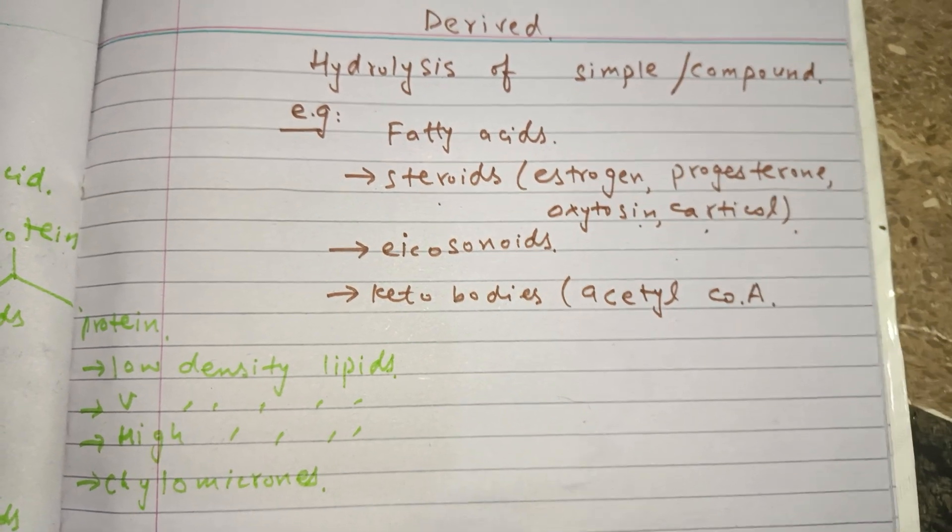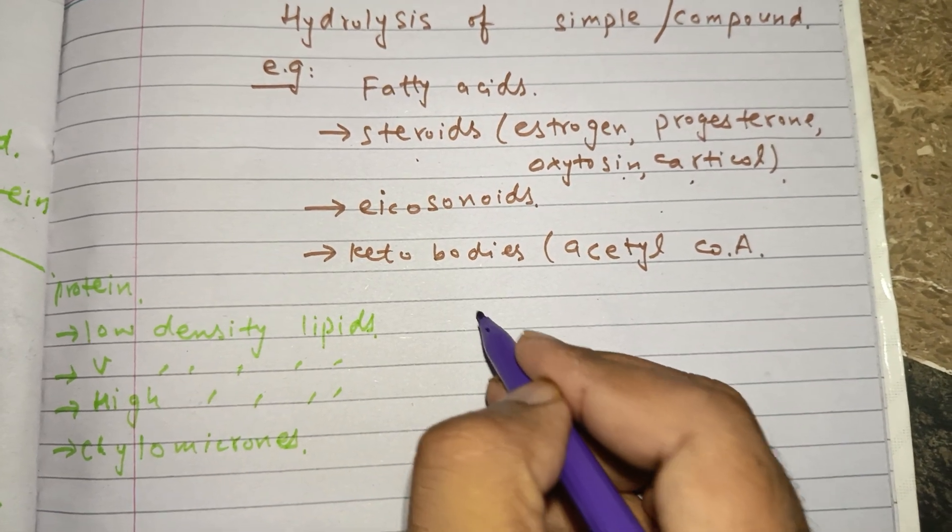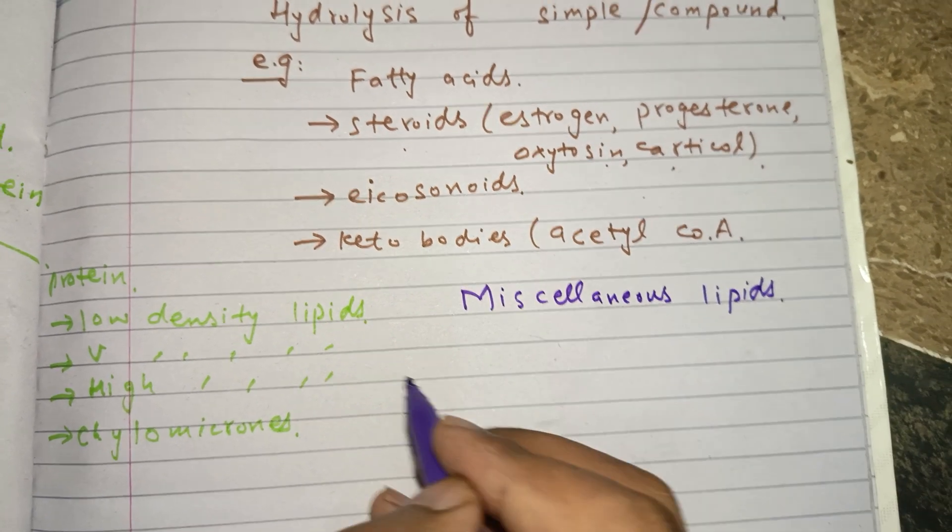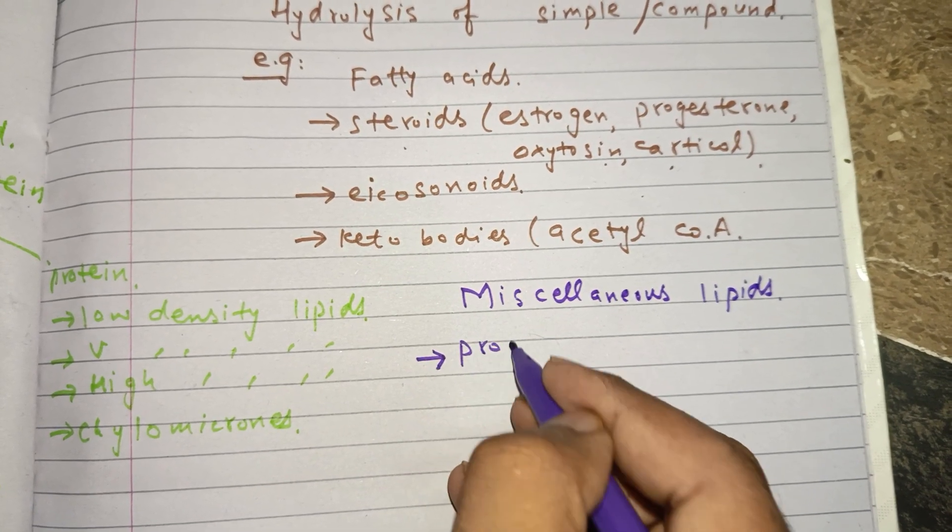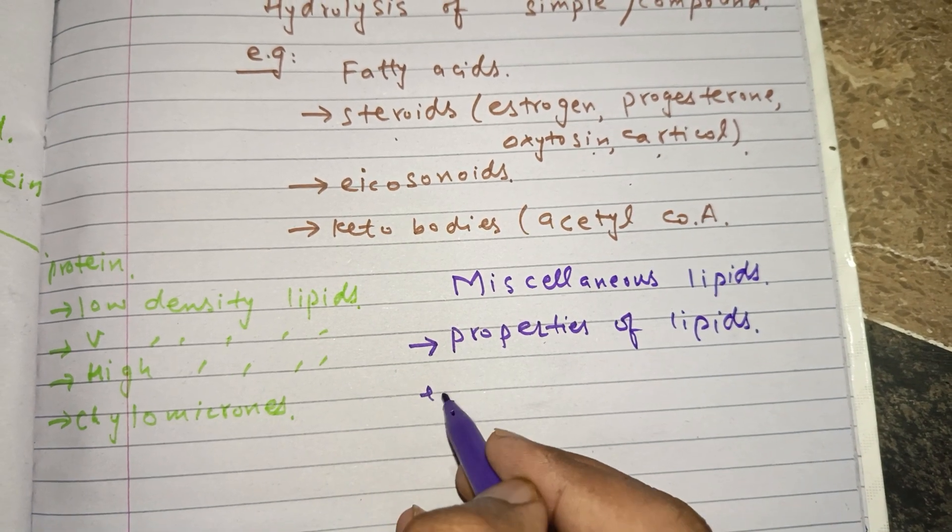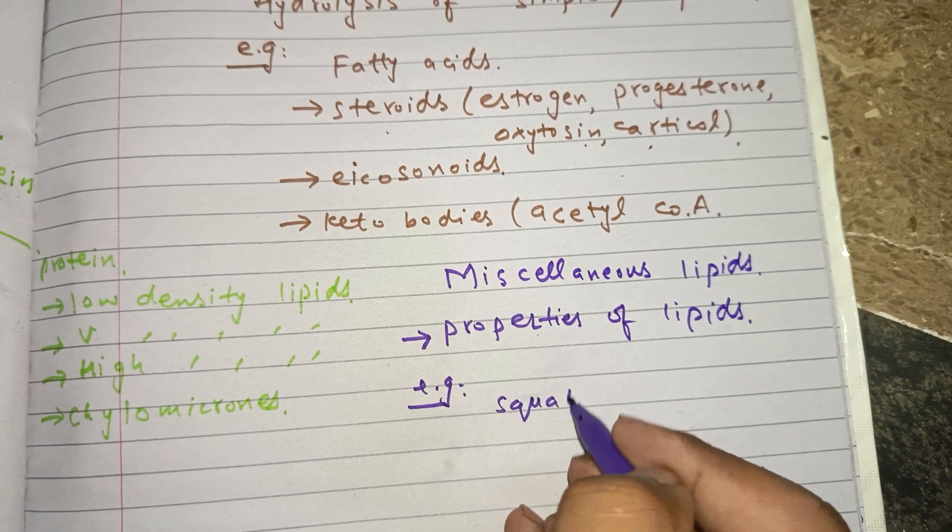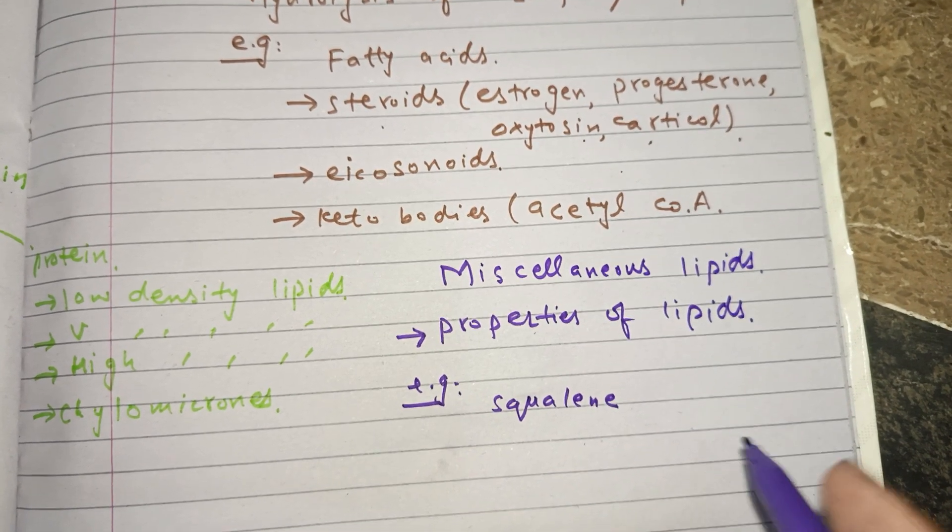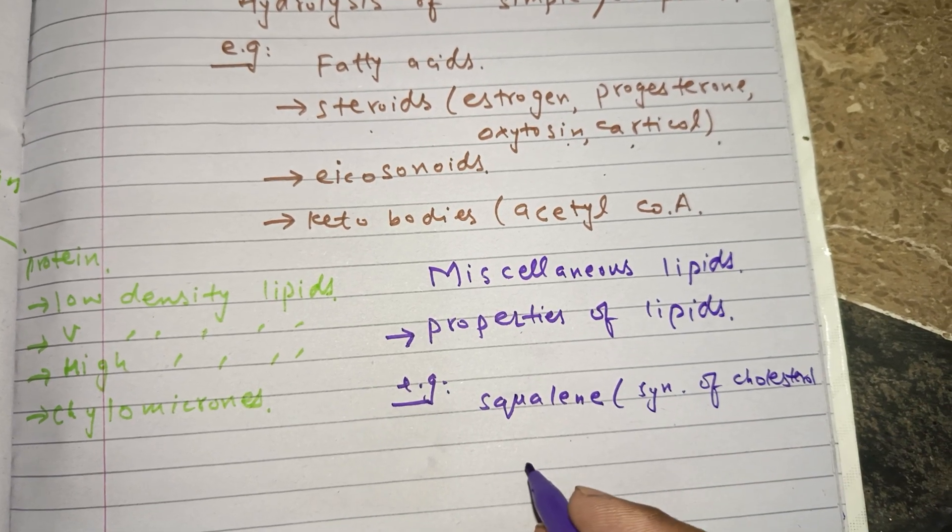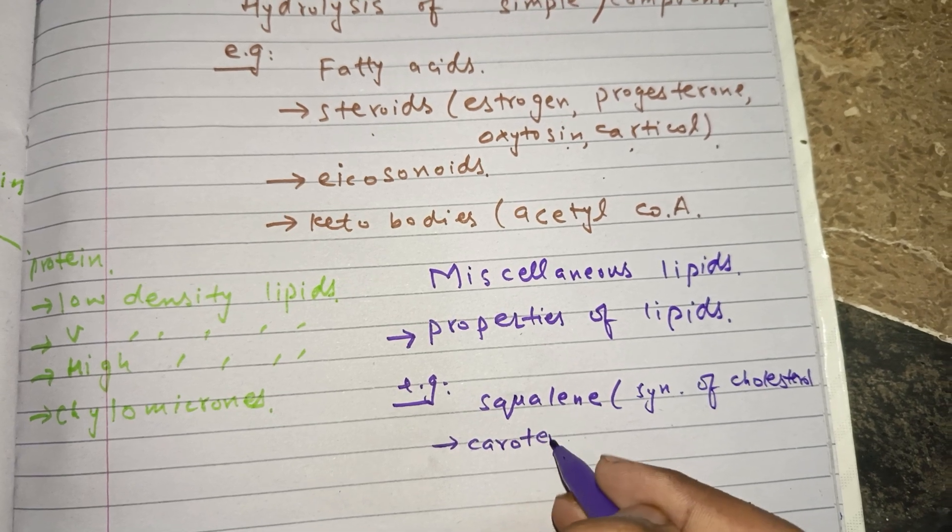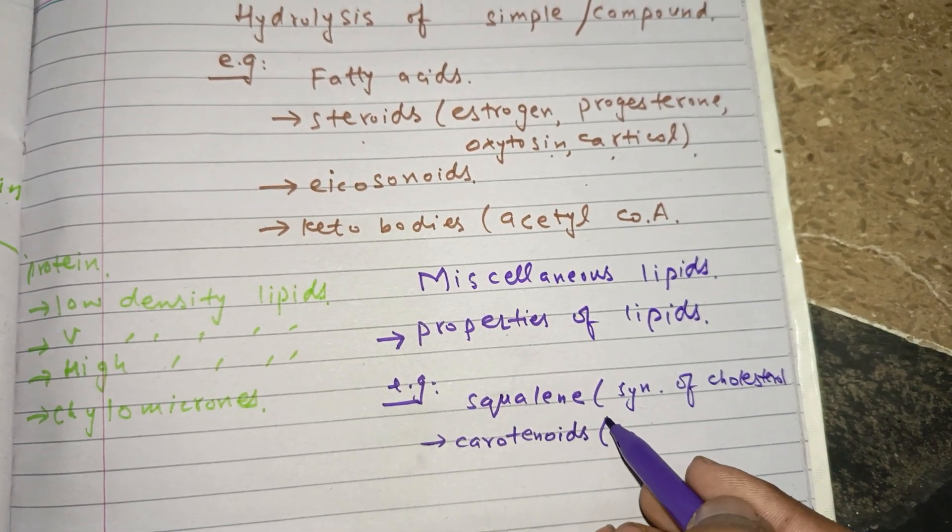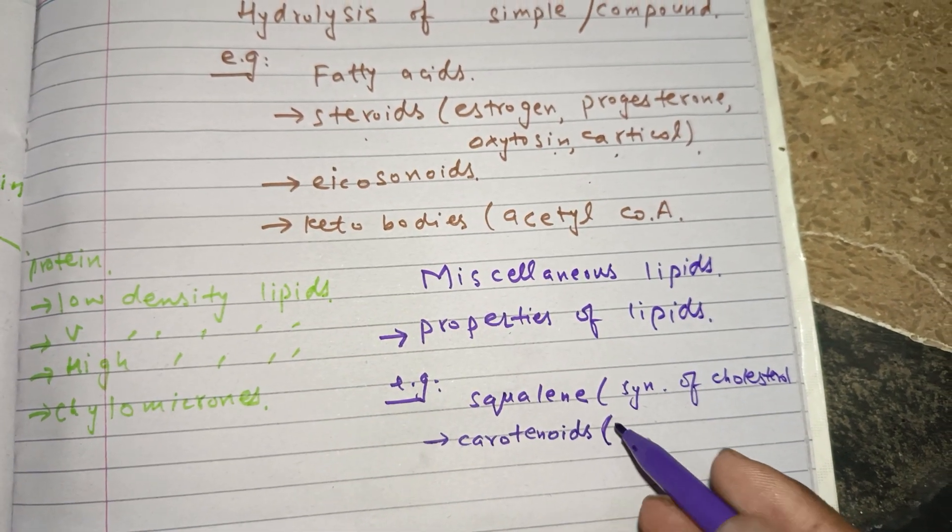The fourth category is miscellaneous lipids. Miscellaneous lipids contain the properties of lipids. Examples include squalene, which is formed during the synthesis of cholesterol, and carotenoids, which are pigments in plant cells.